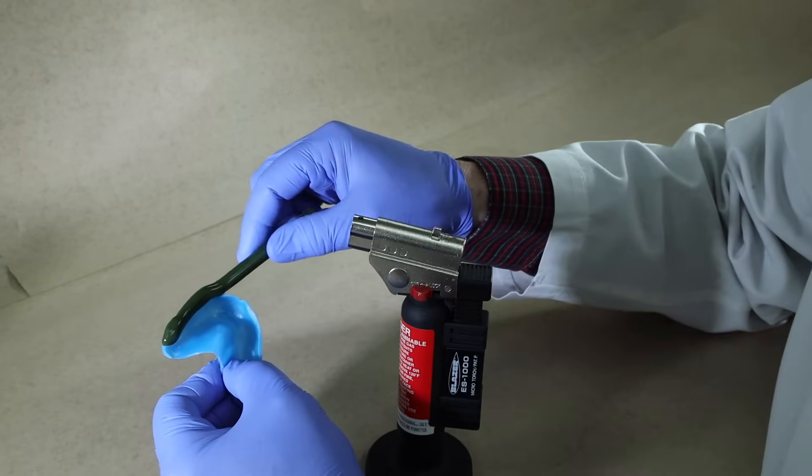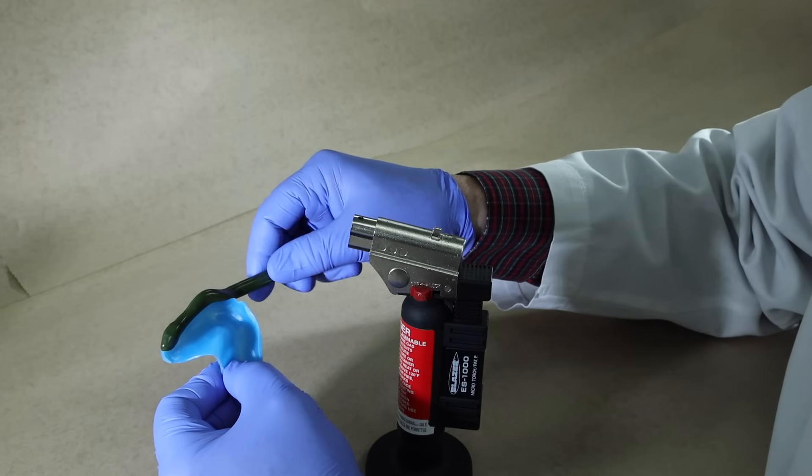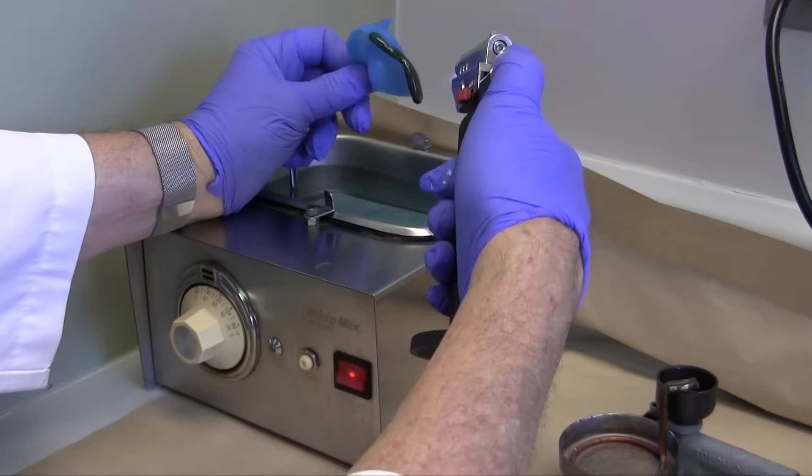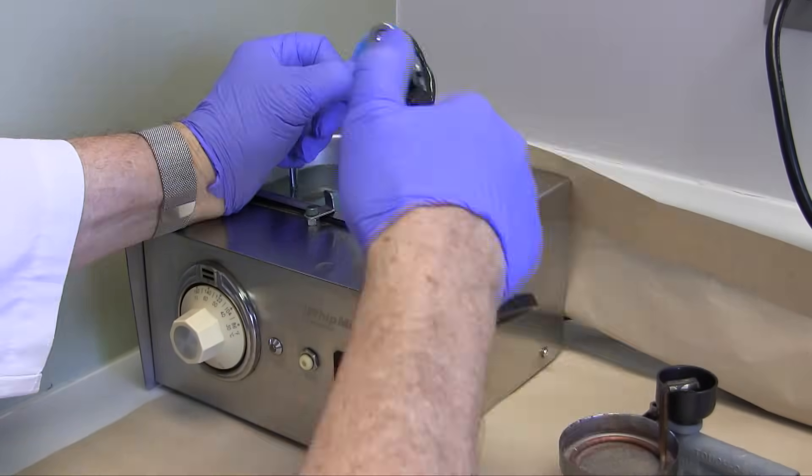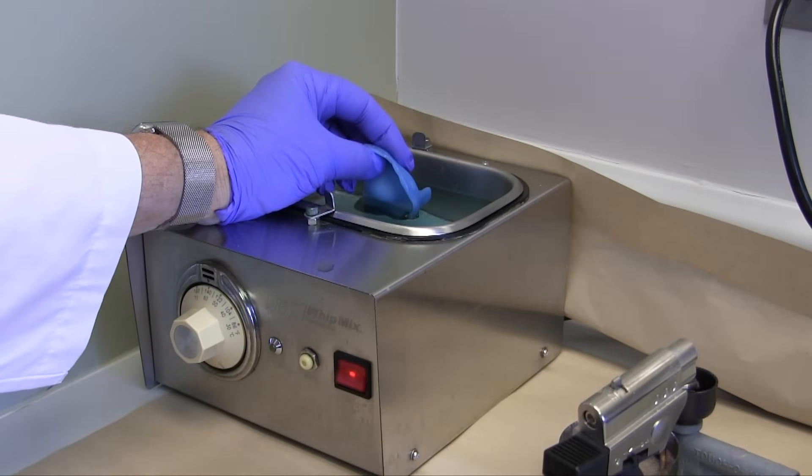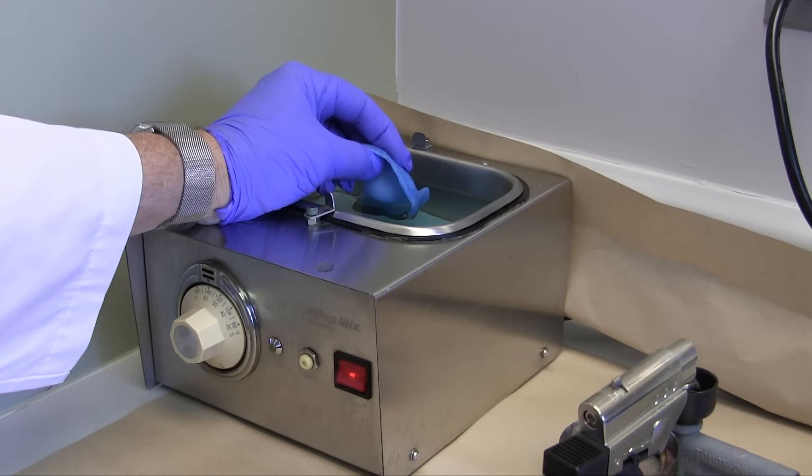Apply compound to the edge of the tray in a thickness just slightly narrower than the compound stick. Flame with a hand torch until all seams or sharp contours have disappeared. Then temper in the water bath for several seconds. This will prevent burning the patient.